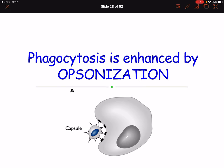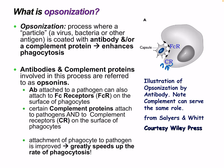Opsonization is a process where a particle — like a virus, bacteria, or another antigen — is coated with an antibody and/or a complement protein, which enhances phagocytosis. Antibodies and complement proteins involved in this process are referred to as opsonins. Antibodies attached to a pathogen can also attach to FC receptors on the surface of phagocytes, and certain complement proteins attach to pathogens and complement receptors on phagocytes. Attachment of the phagocyte to the pathogen is greatly improved, speeding up the rate of phagocytosis.